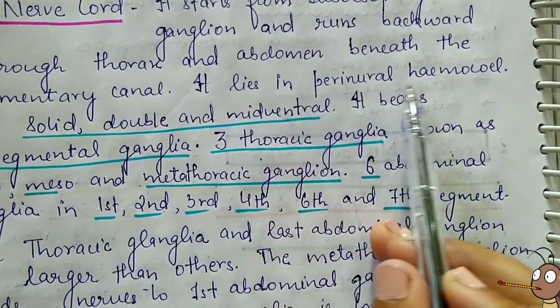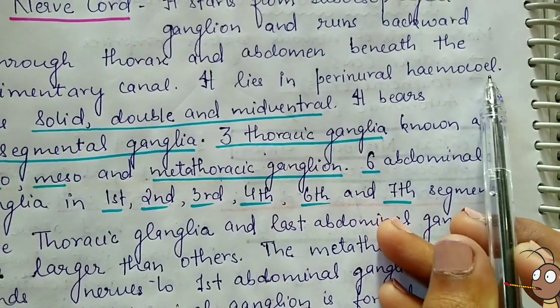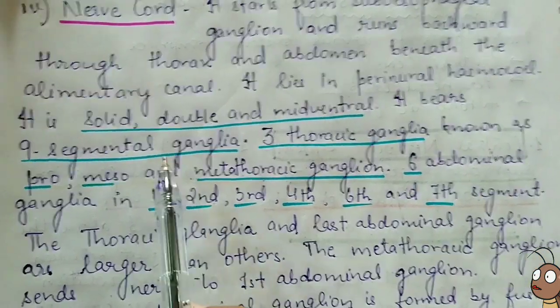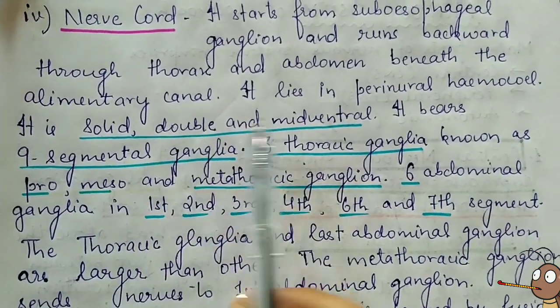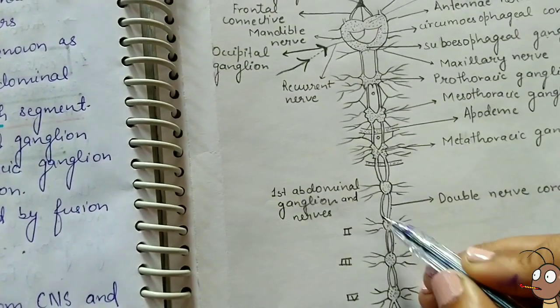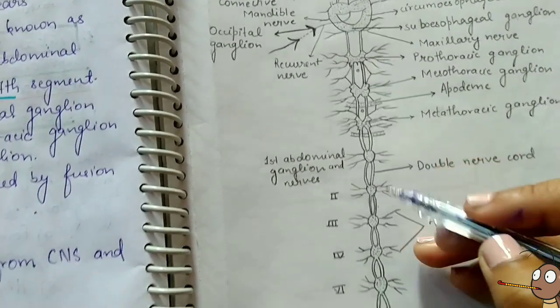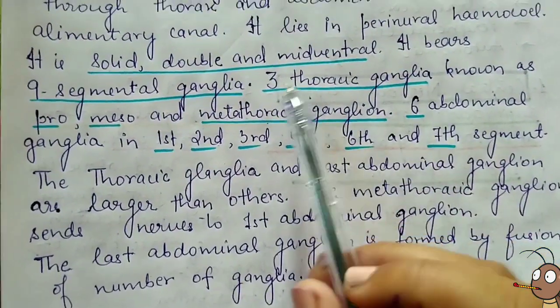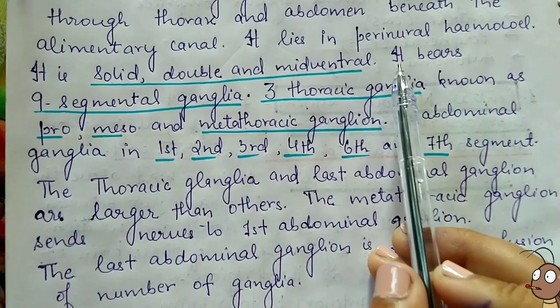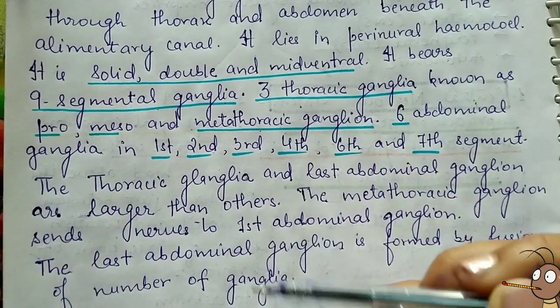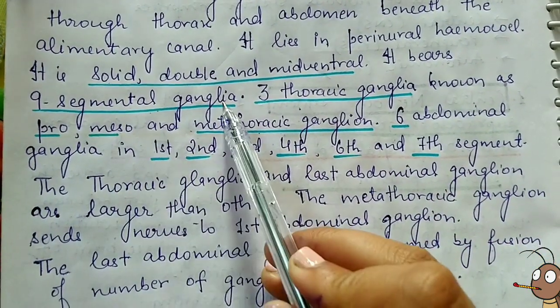The nerve cord is solid, double, and mid-ventral in position. As seen in the diagram, it is a double nerve cord. The nerve cord bears 9 segmental ganglia in total.